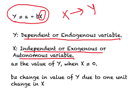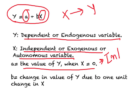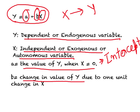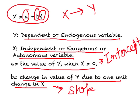Then you have these constants a and b. If I plug in a value of x equals 0, what I'm left with is y equals a, because b times 0 is 0. So a is the value of y when x equals 0, and this is what we call the intercept. Then you have the coefficient associated with the independent variable, which is b. What does b tell you? It tells you by how much y changes due to one unit change in x — in other words, b represents the slope of this line.